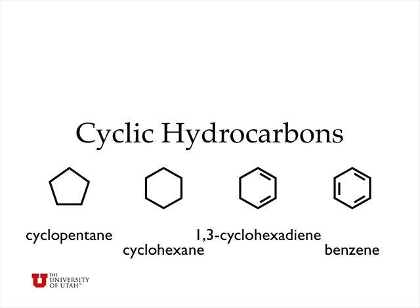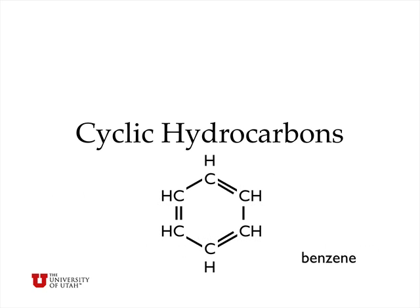There are also cyclic hydrocarbons. Cyclopentane has five carbons in a ring, and each carbon atom has two hydrogen atoms attached to it. Cyclohexane has six carbon atoms in a ring. 1,3-cyclohexadiene is like cyclohexane except it has two carbon-carbon double bonds — the first starting at carbon atom number one, and the second at carbon atom number three. Cyclohexatriene has the special name benzene. Benzene has six carbon atoms in a ring with three double bonds, which gives each carbon atom one extra valency for a carbon-hydrogen bond. Benzene is normally represented by a ring with three double bonds.